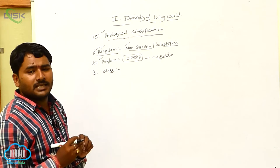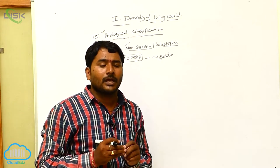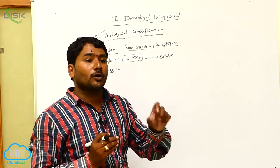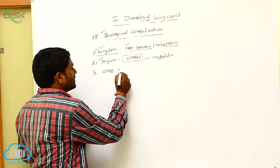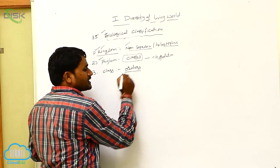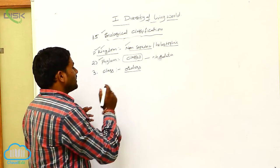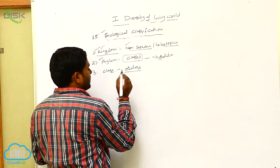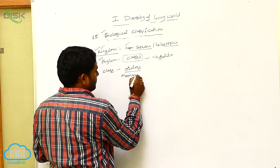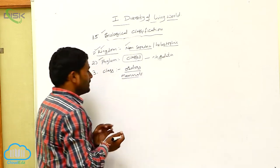Class is a group of one or more closely related orders. For example, if you take mammals — mammals have different types of orders.